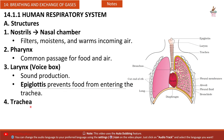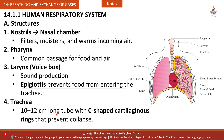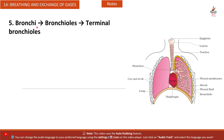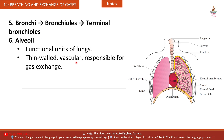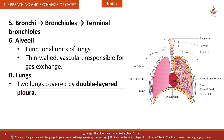Fourth, trachea — a 10 to 12 centimetre long tube with C-shaped cartilaginous rings that prevent collapse. Fifth, bronchioles — including terminal bronchioles. Sixth, alveoli — the functional units of the lungs; thin-walled and vascular, responsible for gas exchange. The two lungs are covered by a double-layered pleura.